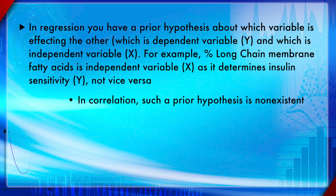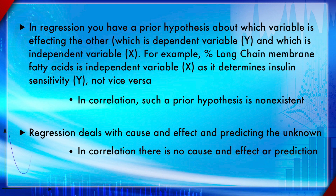Y is the dependent variable and X is the independent variable because X causes change in Y. For example, the percentage of long-chain membrane fatty acids is the independent variable (X) because it determines insulin sensitivity (Y), but not vice versa. Regression deals with cause and effect and is used for predicting the unknown — for example, weather prediction in AI and machine learning.